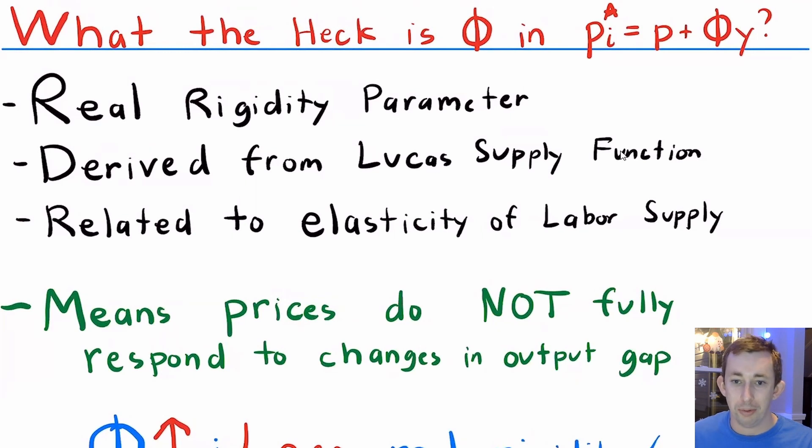This is what we call the real rigidity parameter. Again, it's derived from the Lucas supply function, and it is related to the elasticity of labor supply in that Lucas supply function.